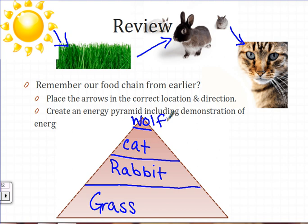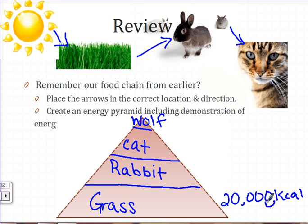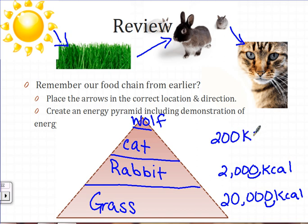Now let's look at energy loss. If we have 20,000 kilocalories available at the producer level, only 10% is available for the rabbits. Move the decimal over one place, leaving 2,000 kilocalories. Then 10% of the energy at the rabbit level is available for the cat — move the decimal again, leaving 200 kilocalories. And if we had a wolf, we'd move the decimal once more, leaving 20 kilocalories available for the wolf.